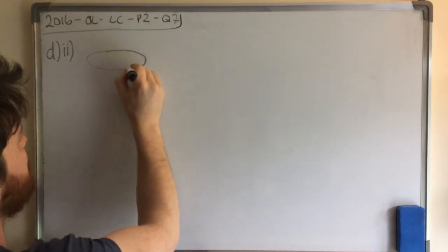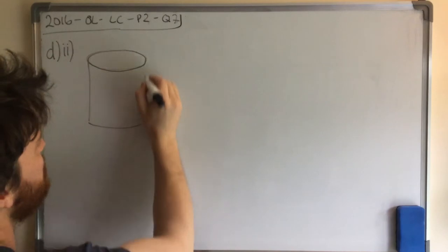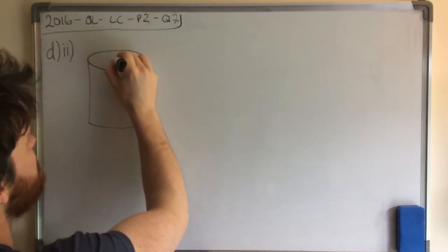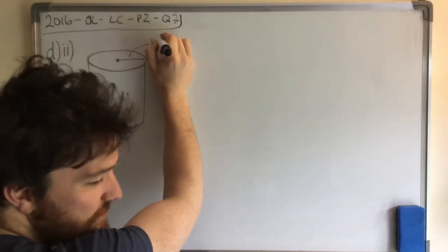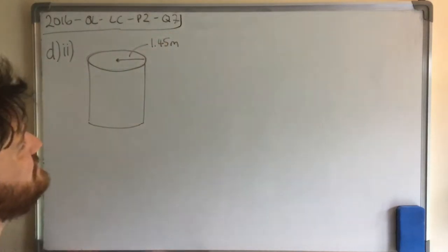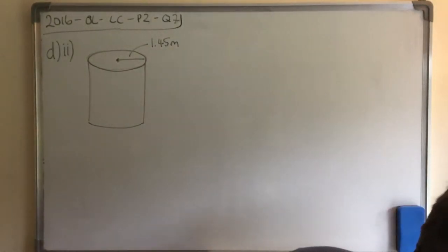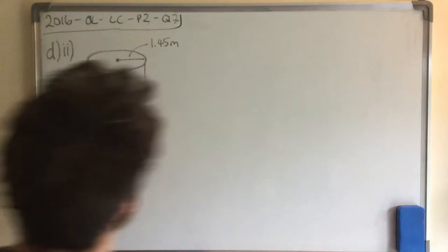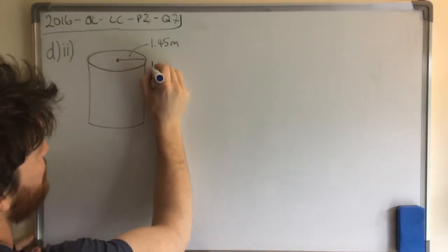It could be Part E instead of Part D Part 2. So what we're going to do first is we're going to draw a cylinder, just to help us see the problem. And we're told that the radius is 1.45 metres. So it's 1.45 and we're told that all 12 pipes are equal in length. So I don't know the length of the pipe, so I'm going to call it X, just for now.